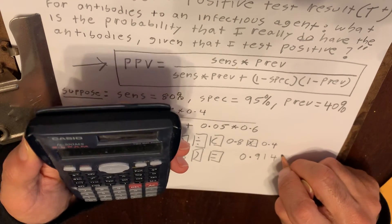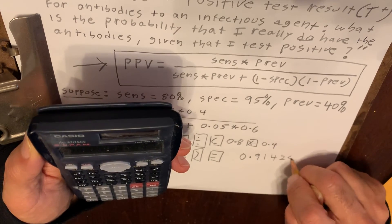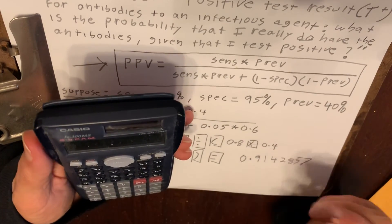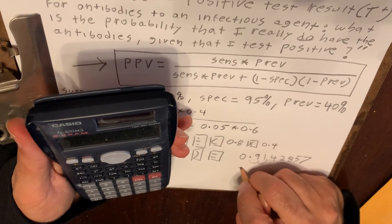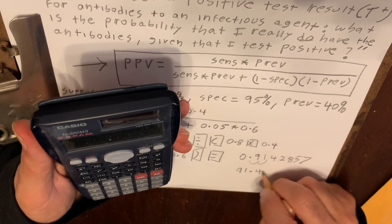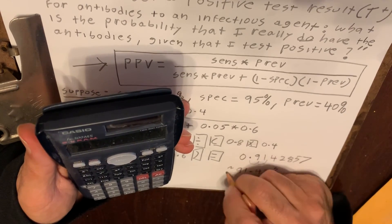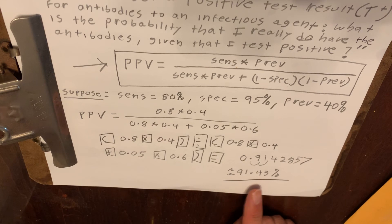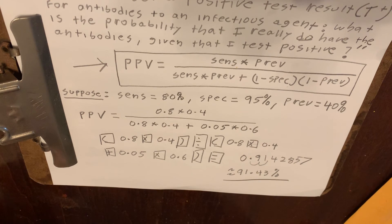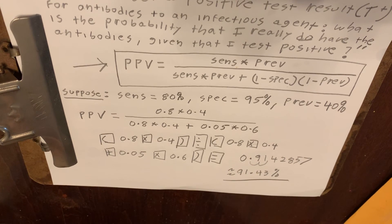If you round this off, it's actually 0.9142857, but if you move the decimal point two places to the right — equivalent to multiplying by 100 — we have about 91.43%. So with this sensitivity, specificity, and level of prevalence, we have a positive predictive value of about 91%. That means the probability that the test result is a true positive, given that he tests positive, is over 90% — which is actually pretty good.